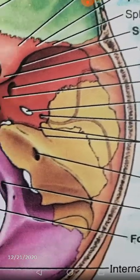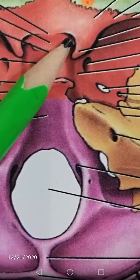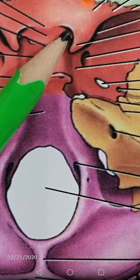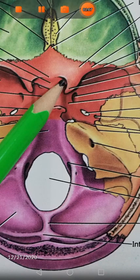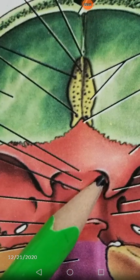On the petrous part of the temporal bone is the opening of the internal acoustic meatus. Just medial to it, the whitish area is the internal jugular foramen. On both sides of the foramen magnum, the blackish rounded foramen is the hypoglossal canal.